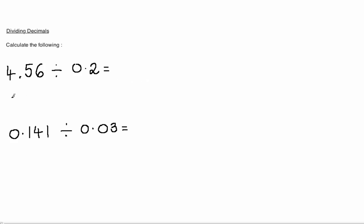Dividing decimals. When calculating 4.56 divided by 0.2, it is important to remember that the second number, the divisor, cannot be a decimal.